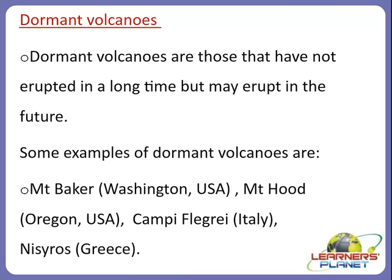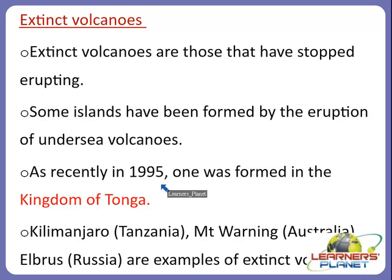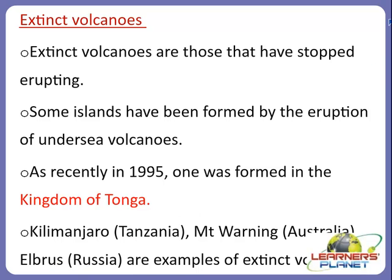The third type are extinct volcanoes — those that have stopped erupting. Some islands have been formed by the eruption of undersea volcanoes, as recently as 1995 when one was formed in the Kingdom of Tonga. Examples of extinct volcanoes include Kilimanjaro in Tanzania, Mount Warning in Australia and Elbrus in Russia. Mars has the biggest crater in the solar system, called Olympus Mons, formed by an extinct volcano.